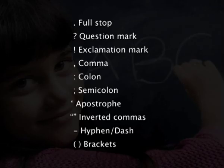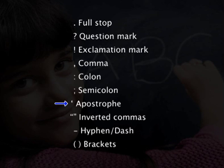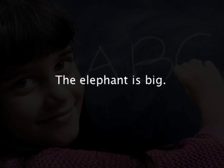Punctuation plays a vital role, and if we do not have a punctuation mark in a sentence, it can give an entirely different meaning. The following types of punctuation marks are: full stop, question mark, exclamatory mark, comma, colon, semicolon, apostrophe, inverted commas, hyphen or dash, and finally brackets. The full stop is used at the end of a sentence — for example, 'the elephant is big.' The question mark is used at the end of a direct question — for example, 'where is the man?'